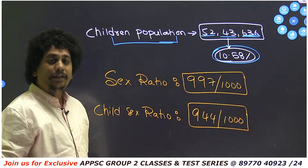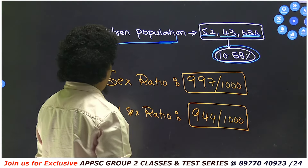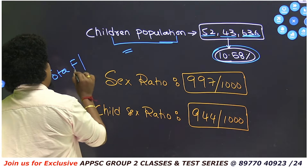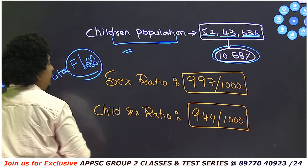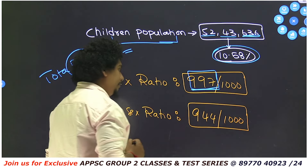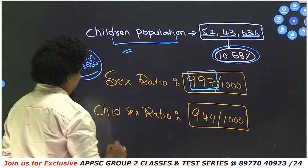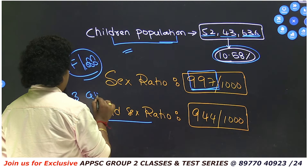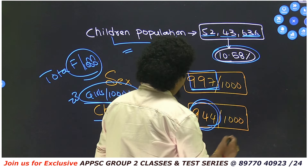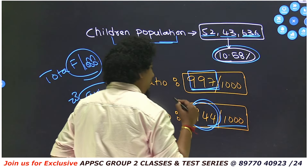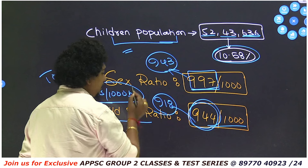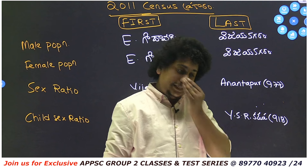Next, child population: in Andhra Pradesh, the child population is 52,43,636 members, which is 10.58% of the total population. The sex ratio — total number of females for every 1,000 males — is 997. The child sex ratio is 945, which is higher than India's average child sex ratio of around 918.